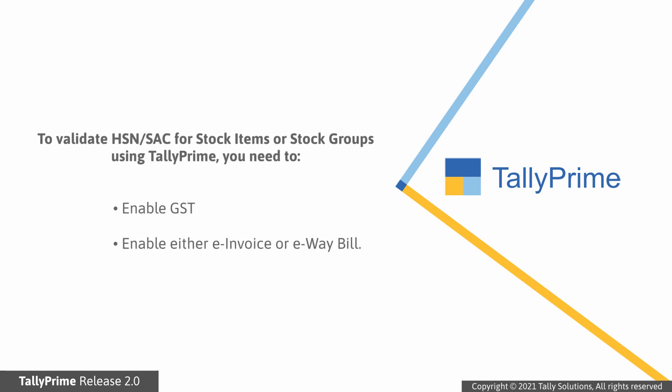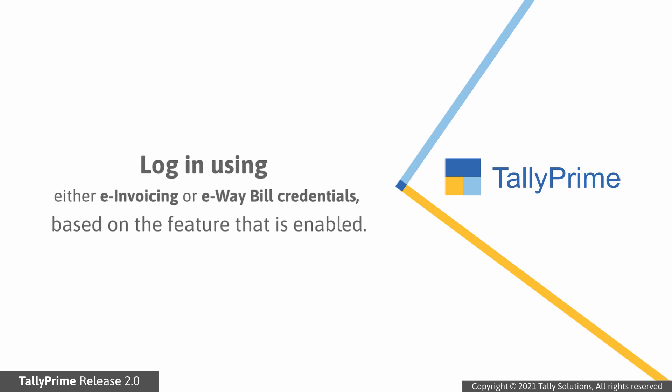For this, you need to enable GST along with either e-invoicing or e-way bill at the company level. Furthermore, to validate HSN or SAC using TallyPrime, you need to log in using either e-invoicing or e-way bill credentials based on the feature that is enabled.